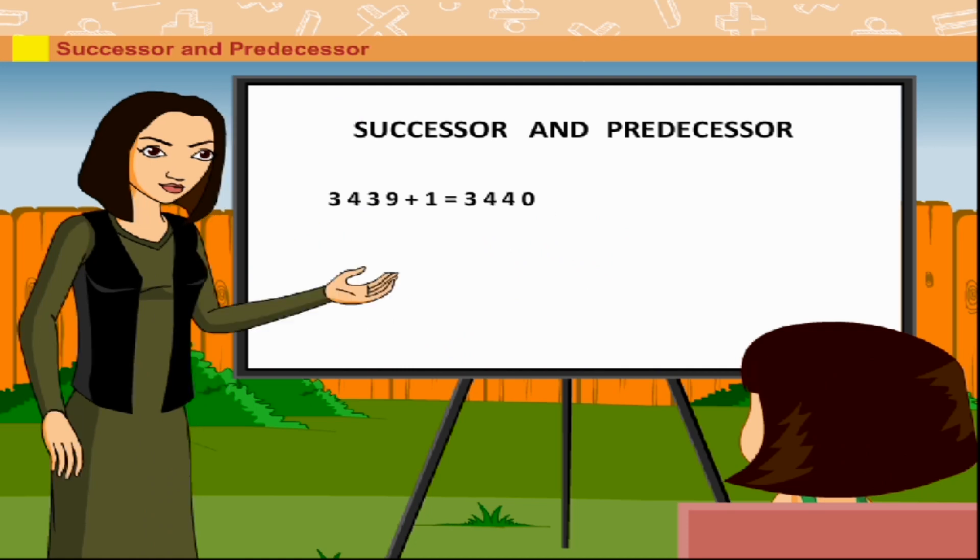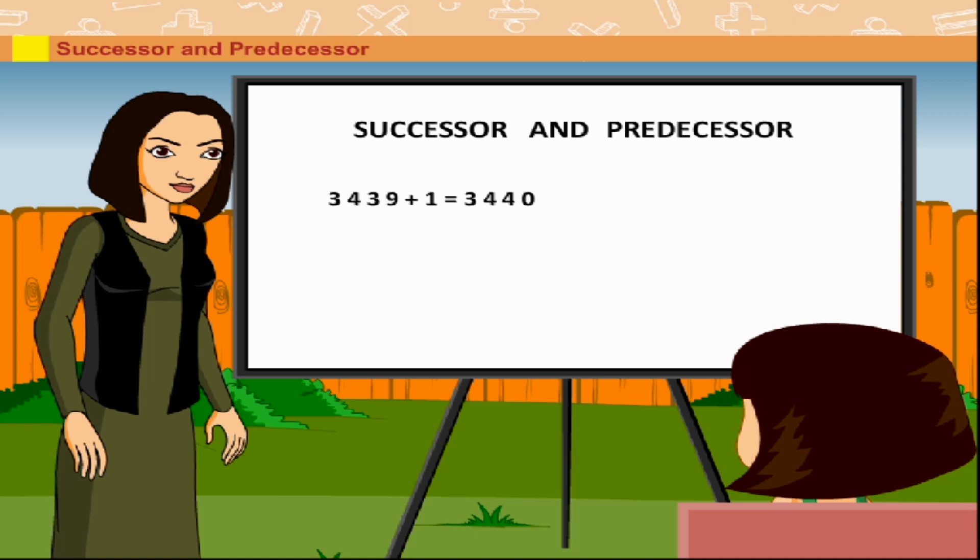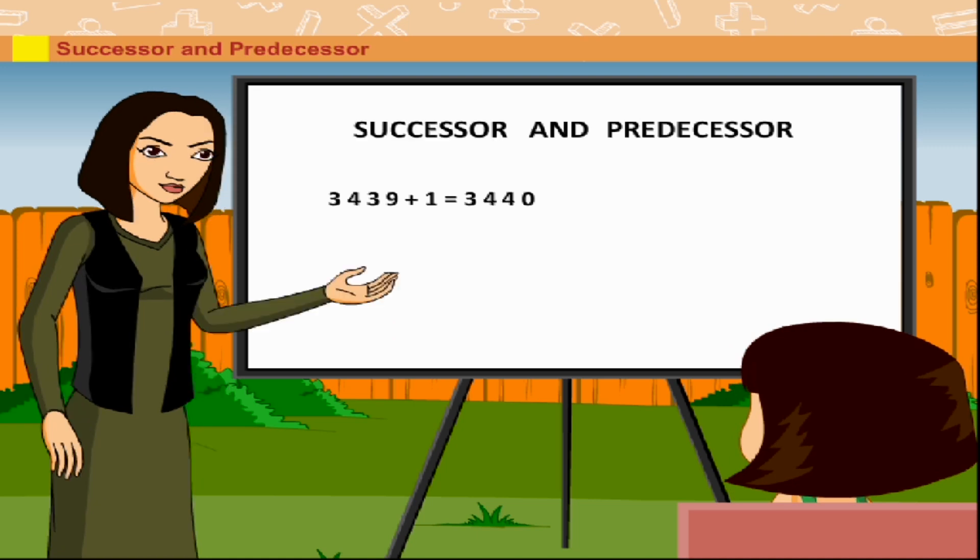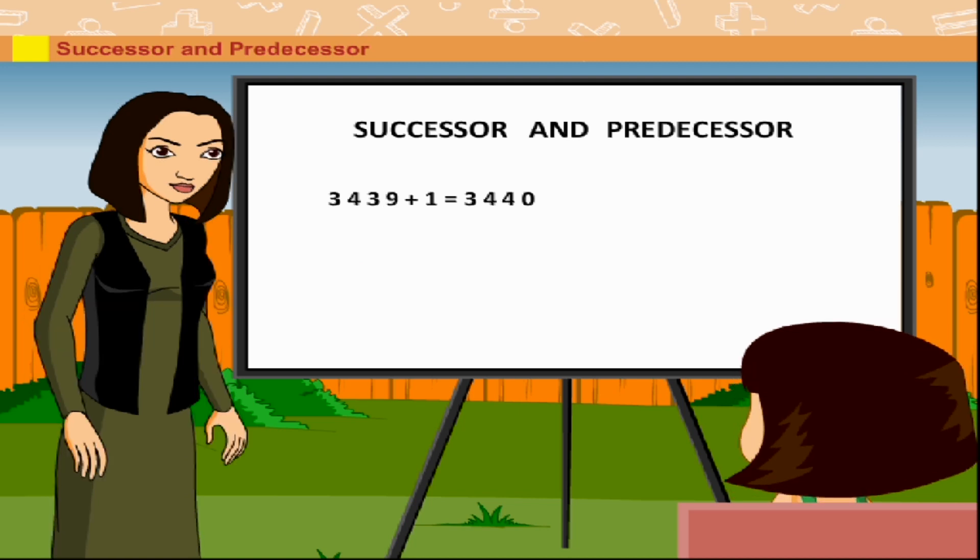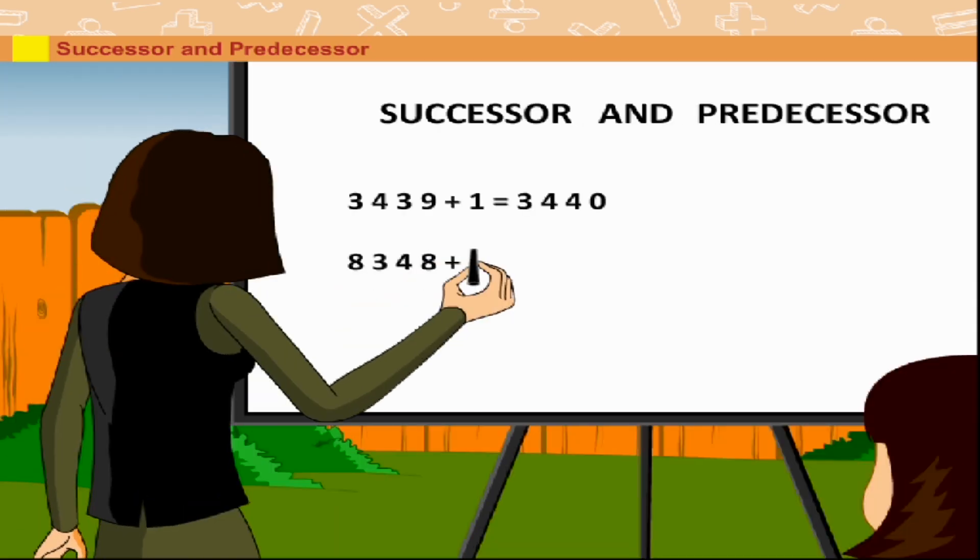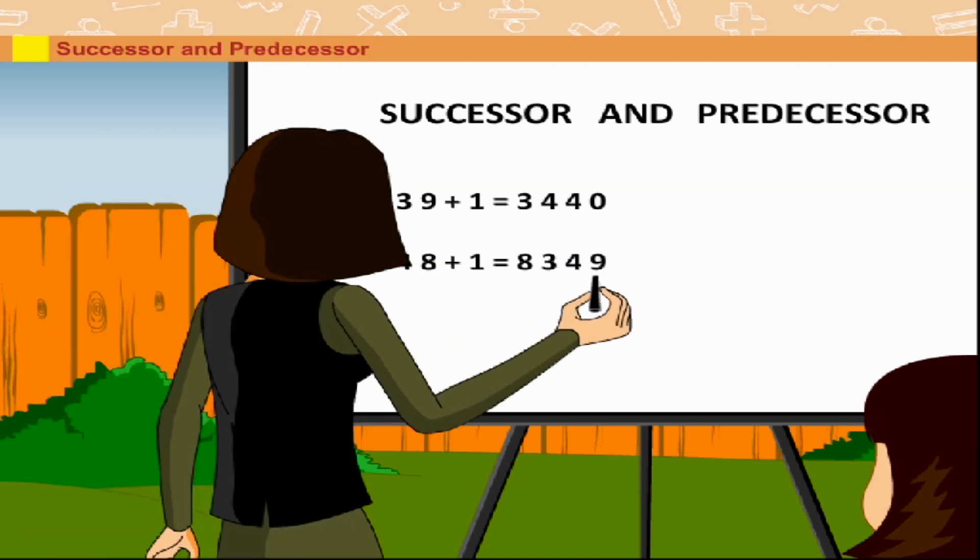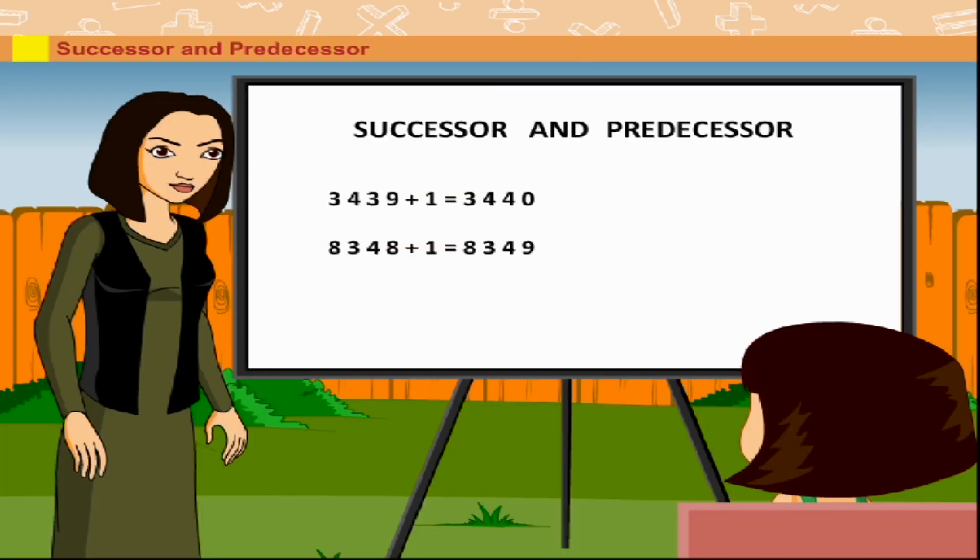Here, 3440 is the successor of 3439. Similarly, 8349 is the successor of 8348.